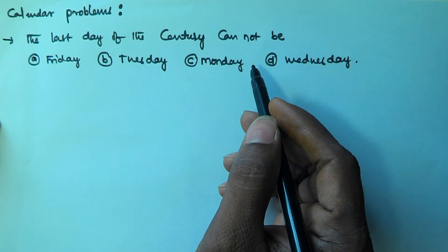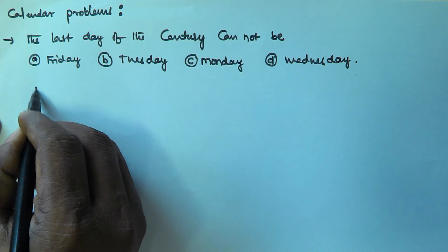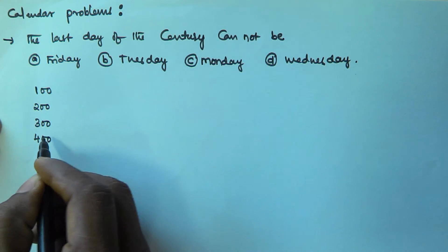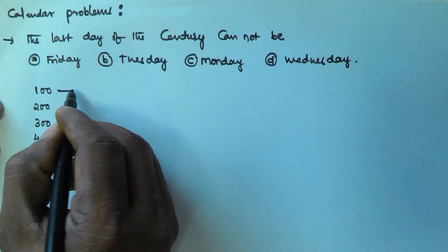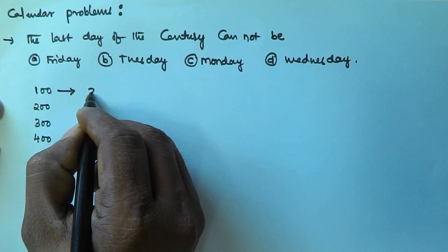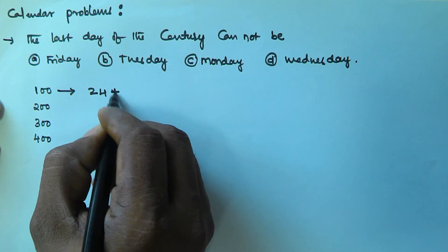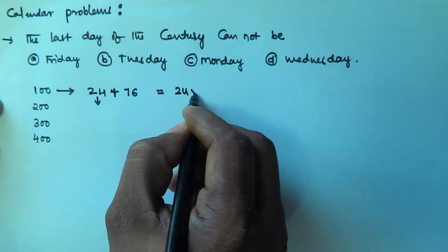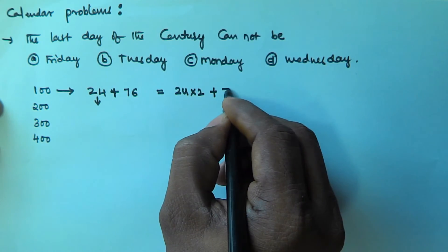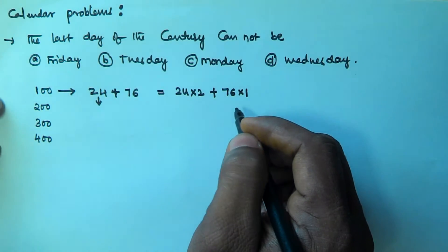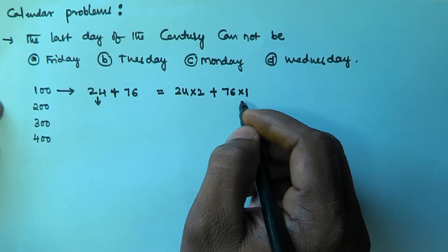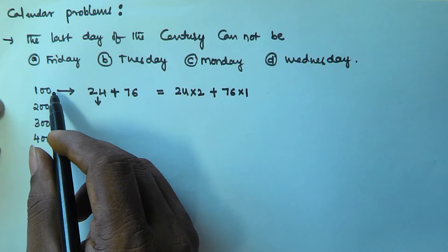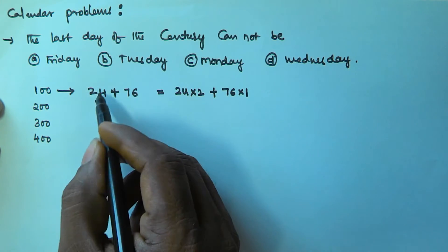So how do we approach this? We will find the last day of 100 years, 200 years, 300 years, and 400 years, and then generalize. We know that 100 years contains 24 leap years and 76 normal years. Note that the 100th year itself is a non-leap year, which is why there are only 24 leap years and 76 non-leap years.